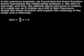In the previous example, we found that the linear function below represents the relationship between x, the time in seconds, and a of x, the altitude above sea level in meters, of a cable car as it climbs up a hill in San Francisco. Graph the linear function and explain the meaning of the slope and y-intercept.